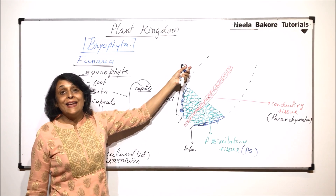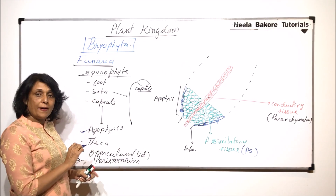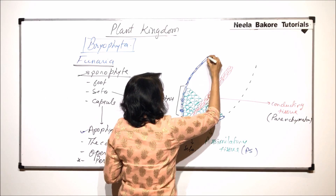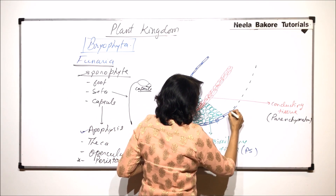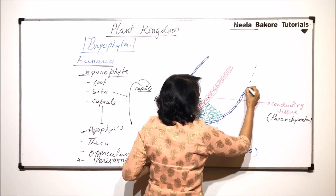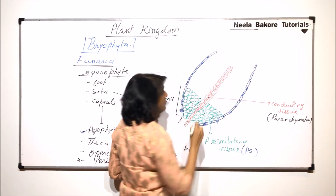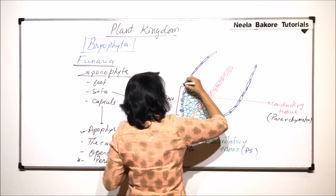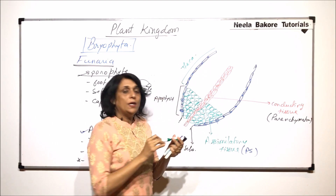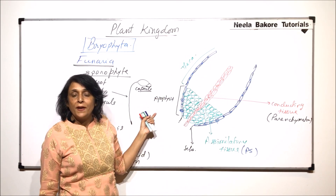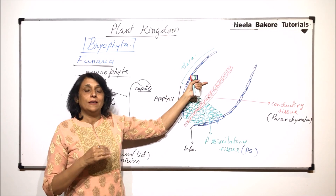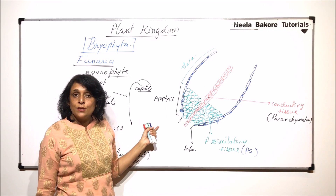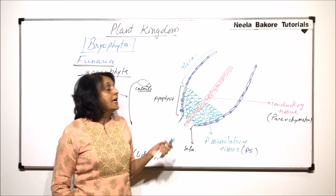Now if we go to the upper part, that is called the theca. In the theca, the outer cells make the same epidermis-like layer — these are also parenchyma cells, but here stomata are absent or even if present they are very few in number. Theca is normally differentiated from apophysis because of the absence of stomata. Inside this theca part again there are parenchyma cells, but these parenchyma cells have bigger air cavities.